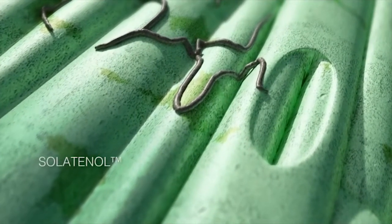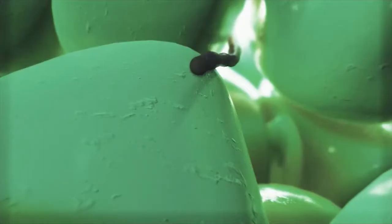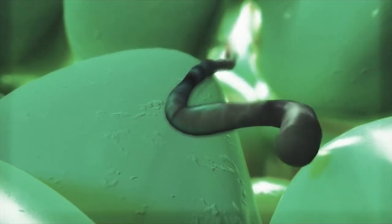Xolatinol is absorbed by the developing hyphae through direct contact, either as it grows on the leaf surface or during its early growth inside the leaf tissue, after penetrating through the stomata.